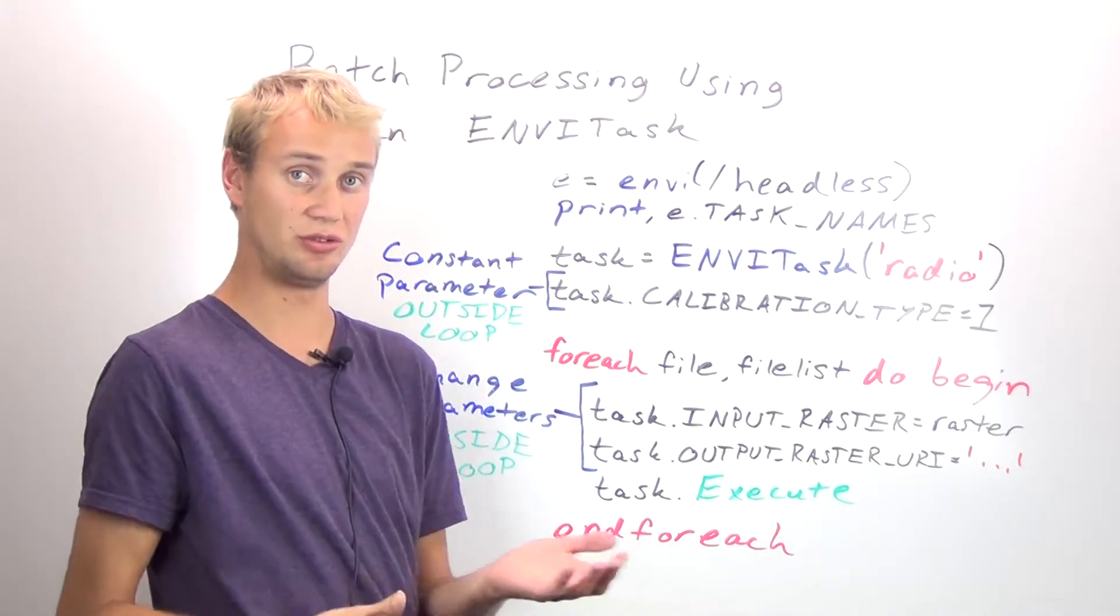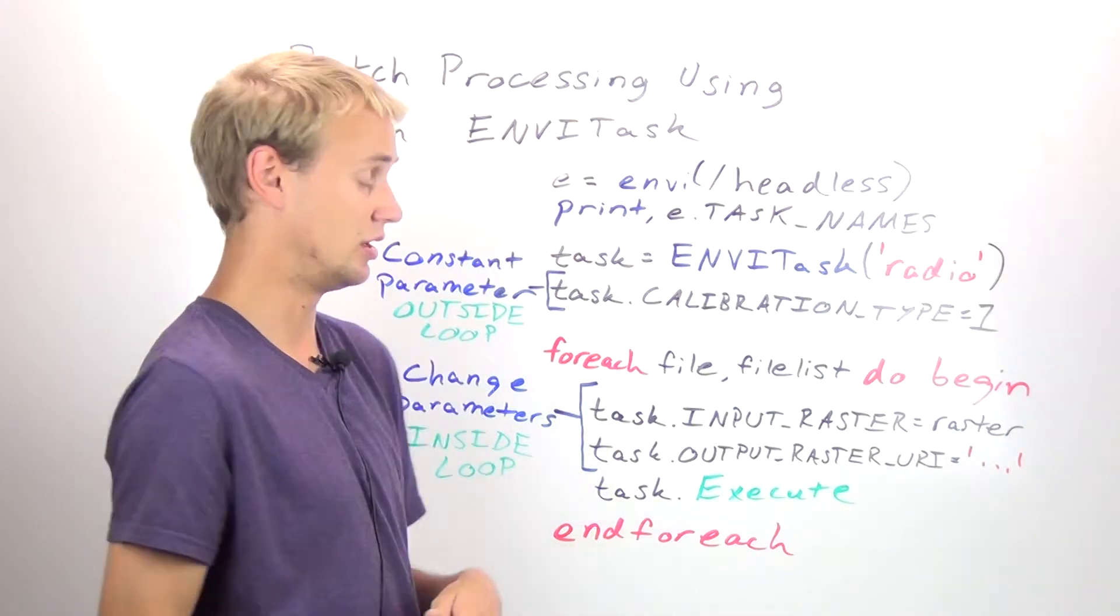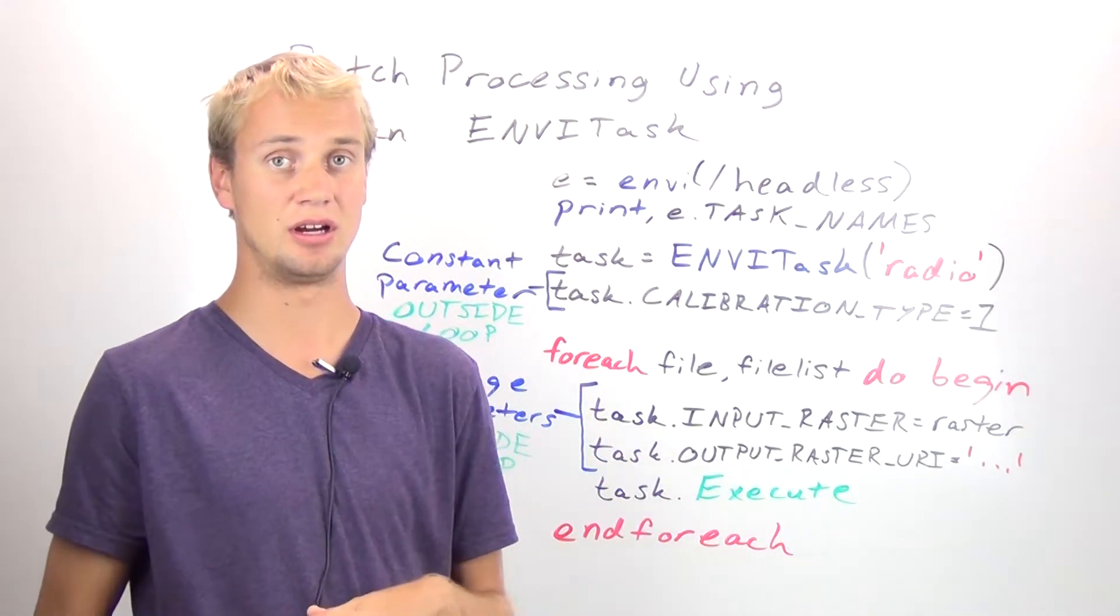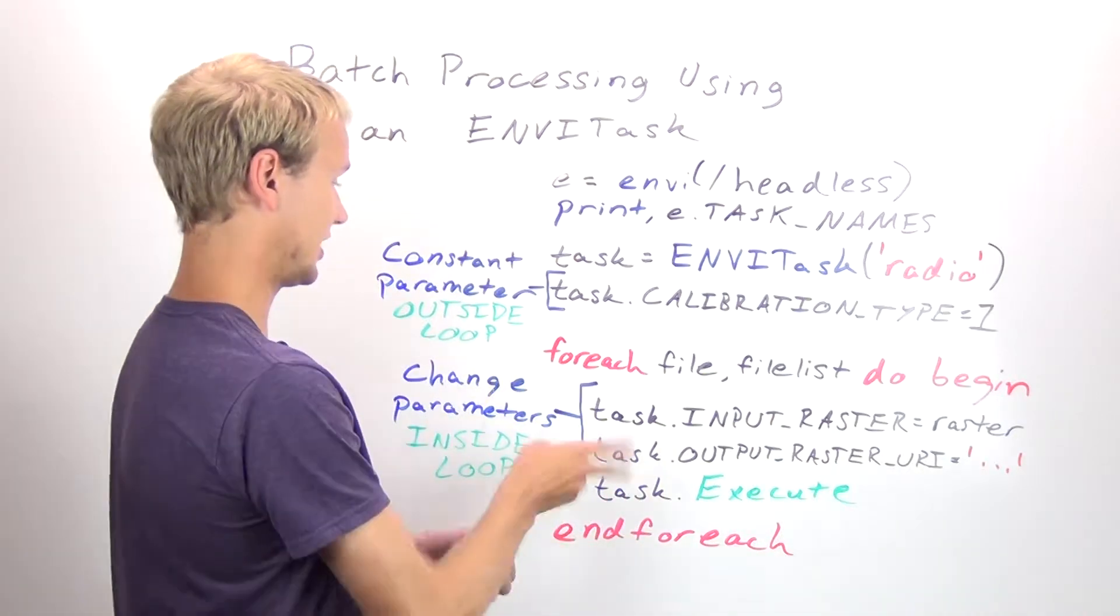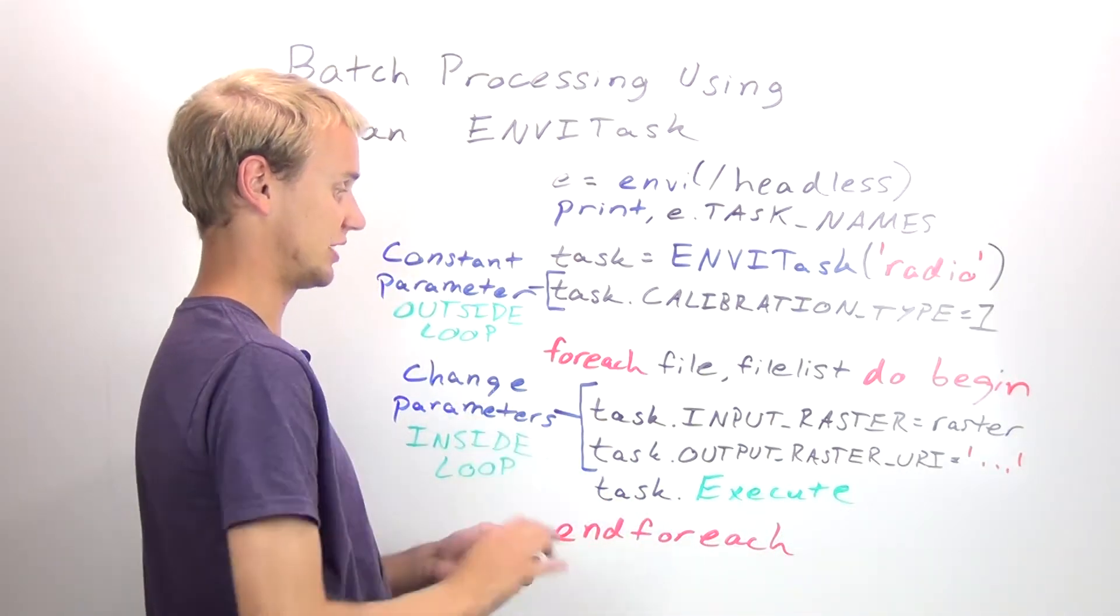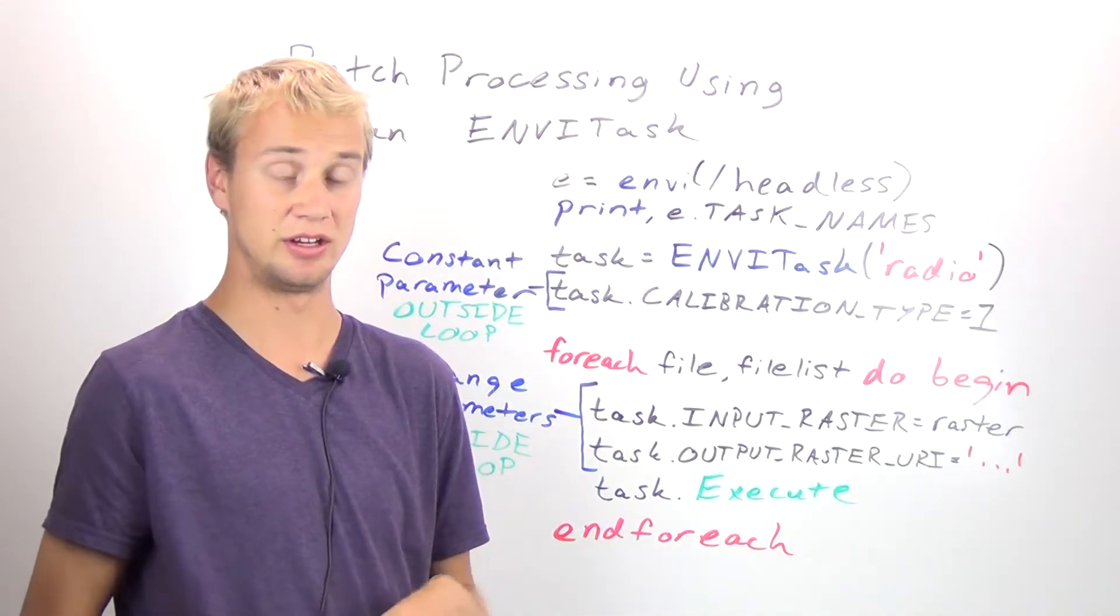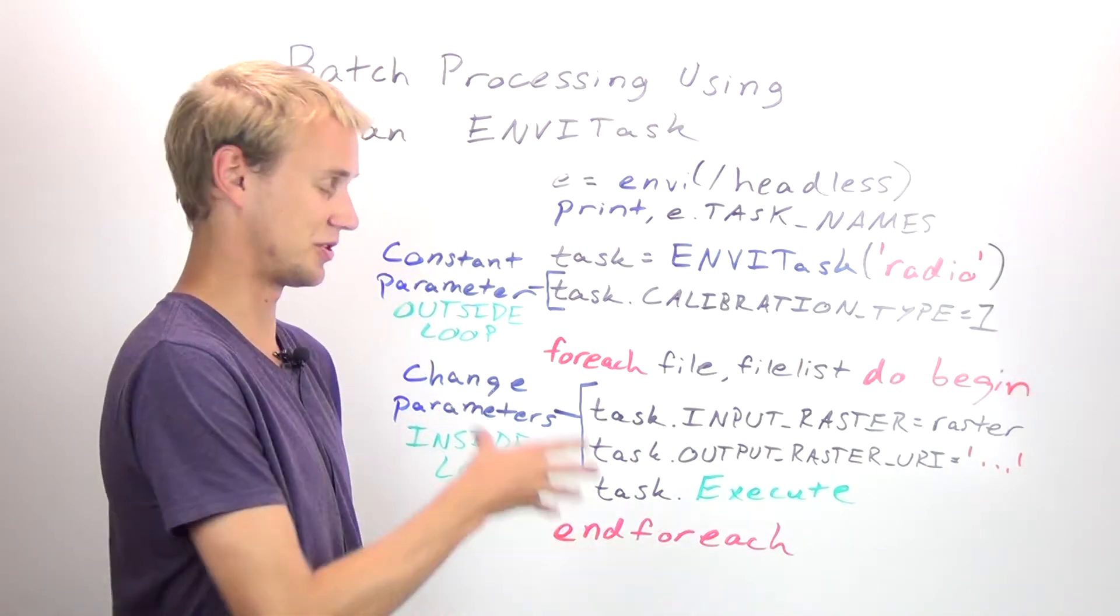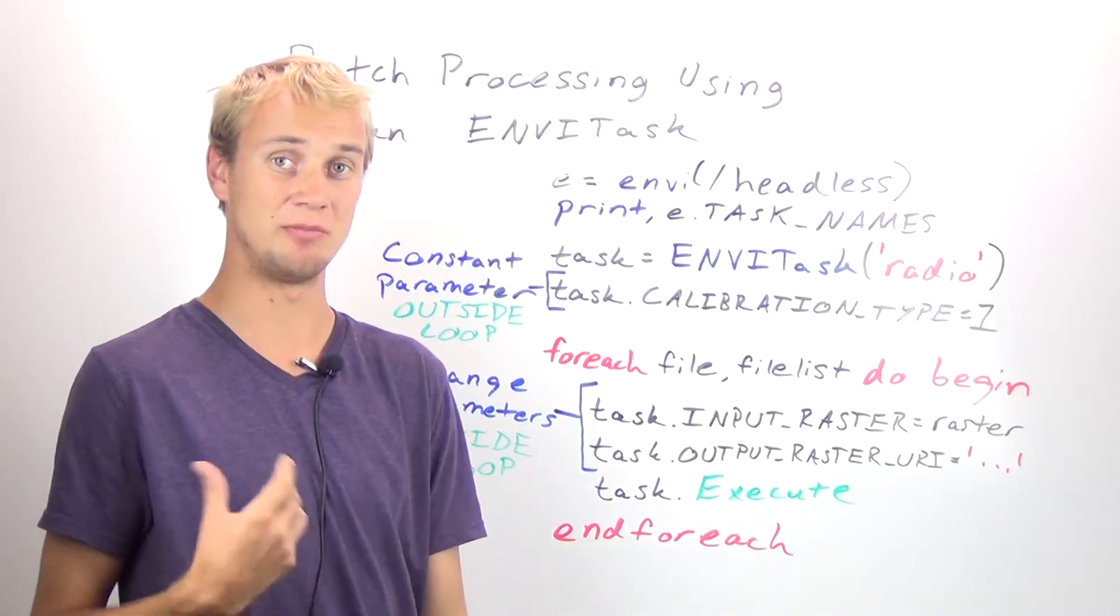Once you actually are going to do the work on each file, you have to loop through each of them and then set the specific parameters that you want to do on the task within the loop. In this case, we're setting the input raster as well as the output file that you're going to write to. And that's going to be in this for each loop here, which I'll describe more on the blog, which you can locate at ExcelusViz.com.